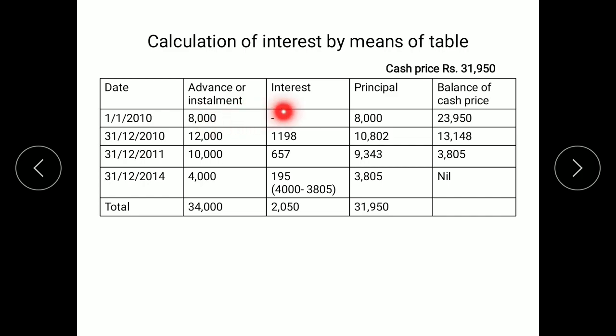This same information is also represented in the form of a table. In the first year, advance is paid with no interest calculated; balance of cash price = total cash price minus advance = 23,950. In the second year, installment of 12,000 is paid; interest is calculated on the balance of cash price and principal = installment minus interest. The same calculation is used for remaining years. In the last year, interest is the difference between installment and the balance of cash price.